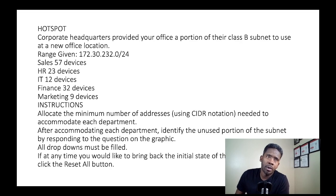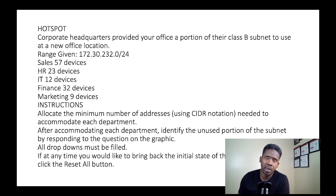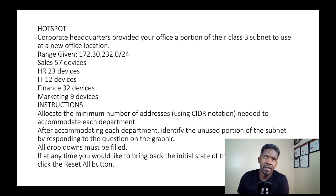Corporate headquarters provided your office a portion of a Class B subnet to use at a new office location. The range given is 172.30.232.0/24. We have the following departments: Sales with 57 devices, HR with 23 devices, IT with 12 devices, Finance with 32 devices, and Marketing with 9 devices.